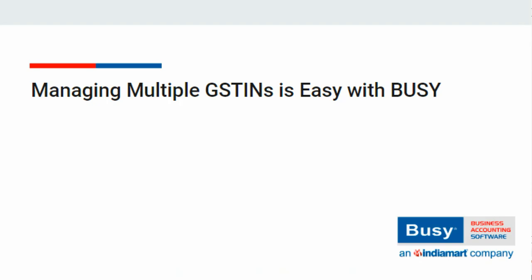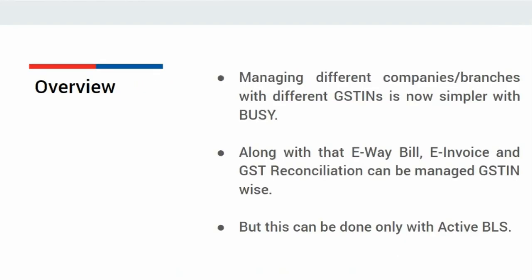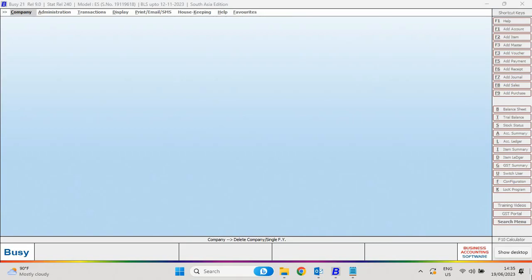Managing multiple GSTINs is easy with Busy. Managing different companies or branches with different GSTINs is now simpler with Busy. Along with that, E-Pay Bill, E-Invoice, and GST Reconciliation can also be managed. But this can be done only with an active BLS of Busy. Let us see its configuration in Busy.